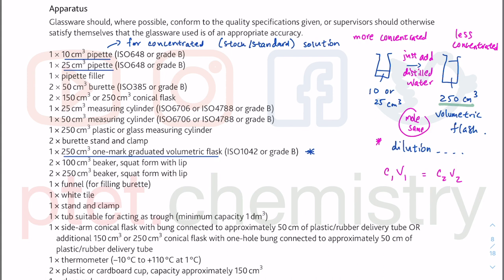To use a pipette, you need something called a pipette filler. You can watch my titration tutorial videos to find out how to use one. You should have used a pipette filler before doing a titration practical. You also have a 50 cm³ burette — in fact, the syllabus asks you to have two 50 cm³ burettes.